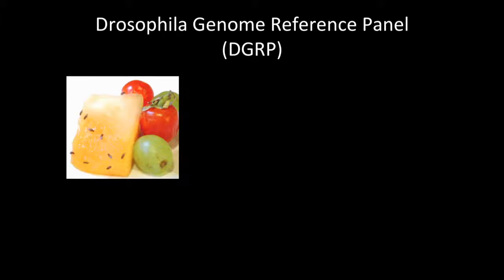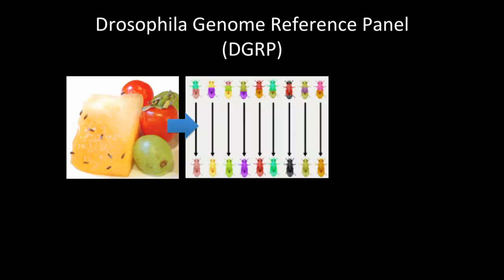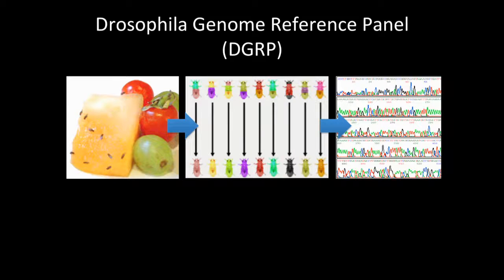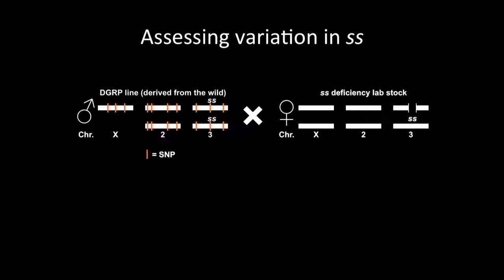To get at this question, we use the DGRP, which is a collection of 205 fly lines from the wild that have been inbred and sequenced. To assess the variation just within the spineless locus, we took each DGRP line and crossed it to our spineless deficiency lab stock, and then analyzed the resulting spineless on-off ratio in the progeny. The idea is, assuming that the SNPs are recessive, we'll be looking at variation that's just attributable to the spineless locus.